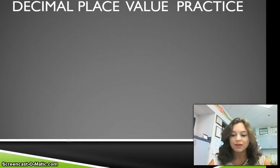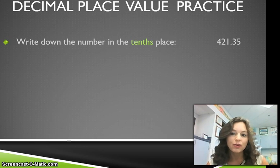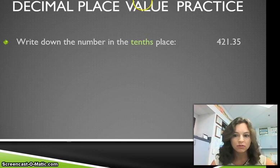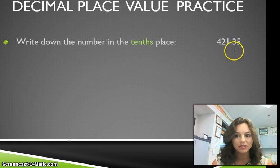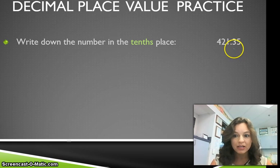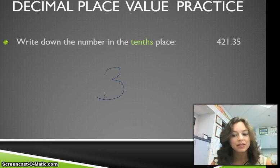Let's practice some decimal place value. Write down the number in the tenths place. We have 421 and 35 hundredths. We have a 4 in the hundreds place, a 2 in the tens place, a 1 in the ones place, and this first place after the decimal — this 3 is in the tenths place. The 5 is in the hundredths place. So we'll write down 3 because that is the number in the tenths place.